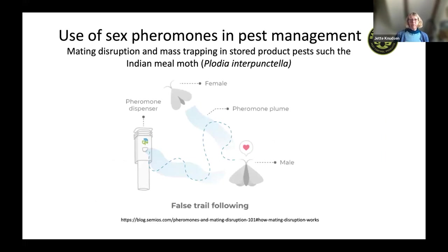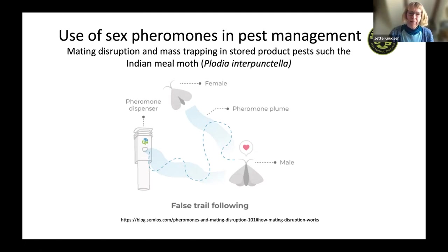Examples of pheromone usage in pest management include mating disruption and mass trapping in stored product pests, such as the Indian meal moth, where female moths emit sex pheromones and the males try to follow and find the females. You can disrupt their ability to find the female by placing dispensers with similar pheromones so they cannot distinguish real females from dispensers. You may also use the same pheromone to mass trap males with a good trapping system.